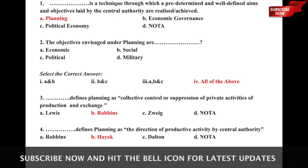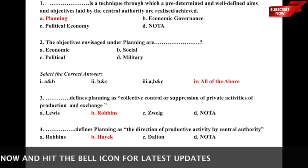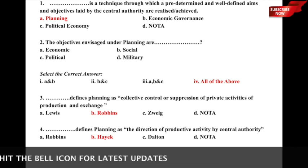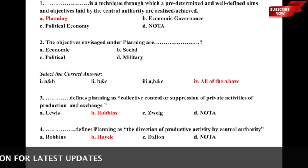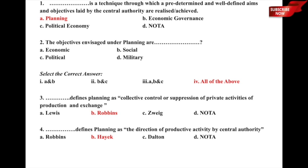Question 4: Dash defines planning as the direction of productive activities by the central authority — whether it is a) Robbins, b) Hayek, c) Dalton, or d) none of the above. The correct answer is option b) Hayek, who defines planning as the direction of productive activities by the central authority.